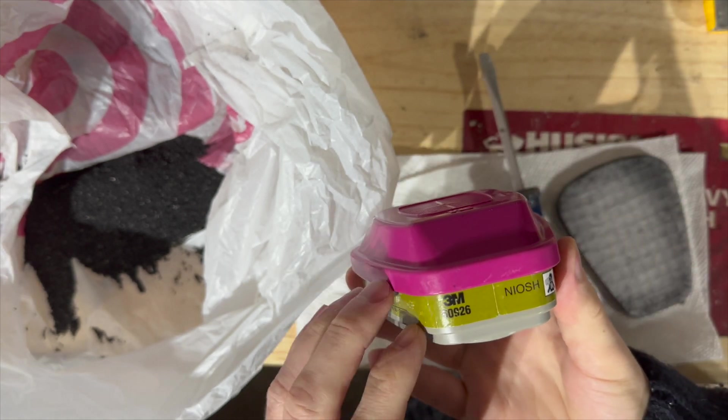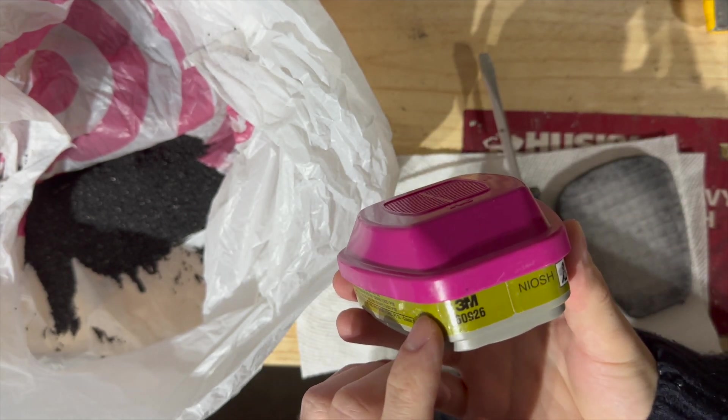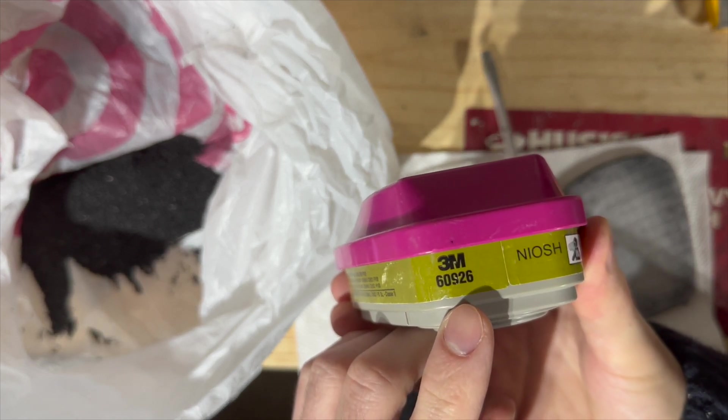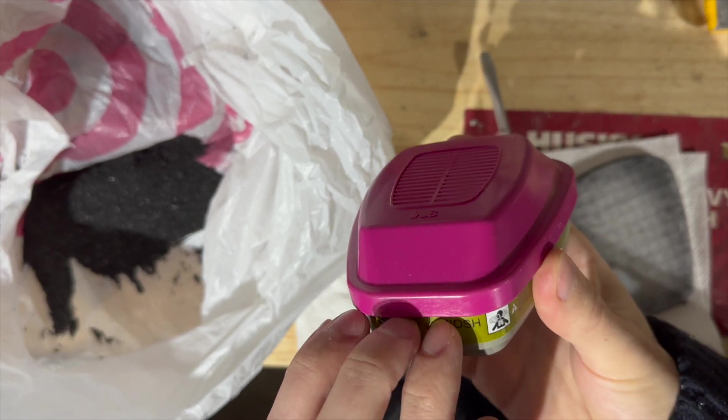This is going to be a quick video on how to take this apart. If you have one of these, you know it's a one-time use. This is a 6926, it has charcoal inside, it's meant for VOC spray painting and chemicals.